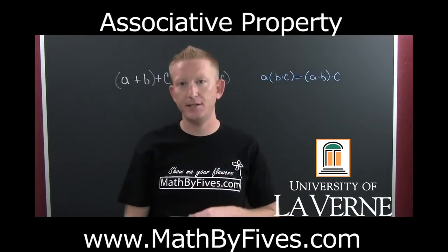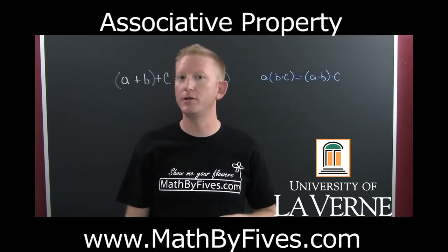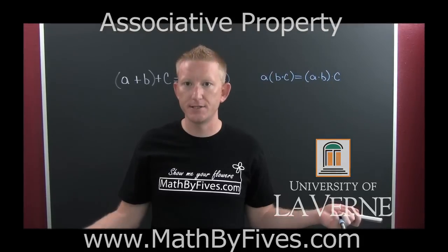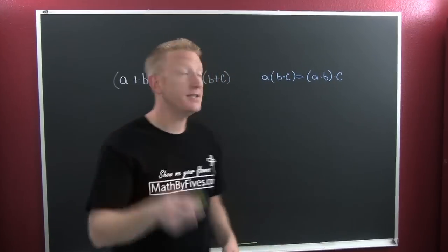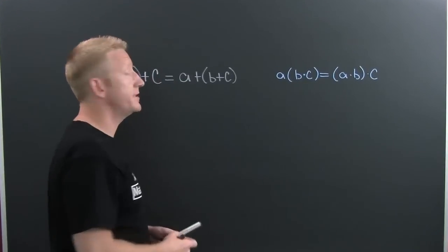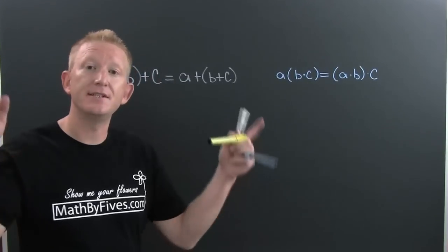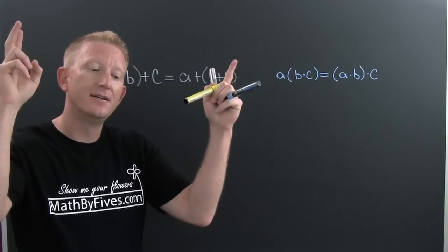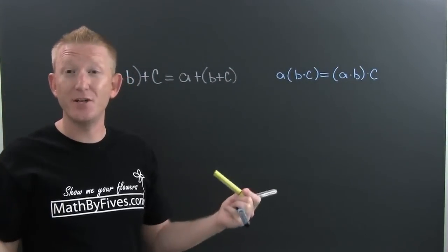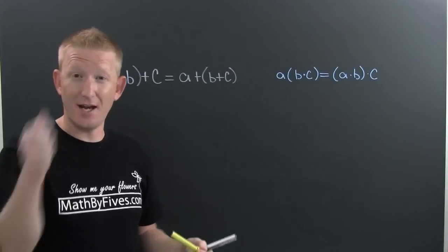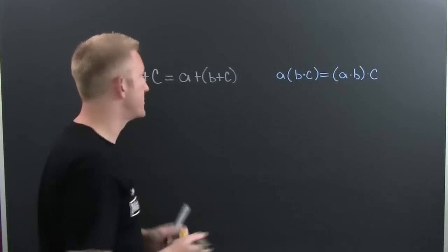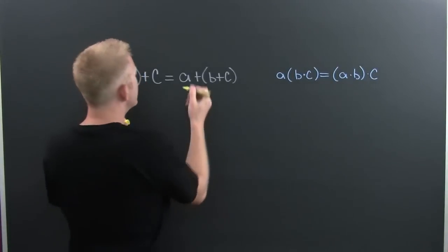Another property of our algebra system is the associative property. This is where we're actually grouping them. They're associations, our circle of trust.